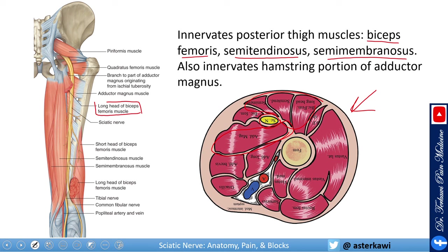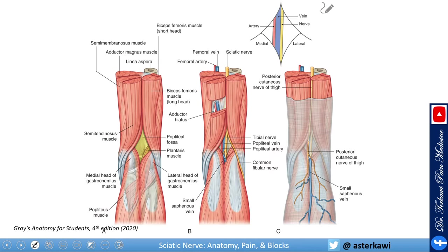Here you see the long head of the biceps femoris. With the biceps femoris removed, you can still see the nerve, and you see the semitendinosus. Behind it and more medially is the semimembranosus. The nerve continues to descend — just before the popliteal fossa, which has that classic diamond shape.